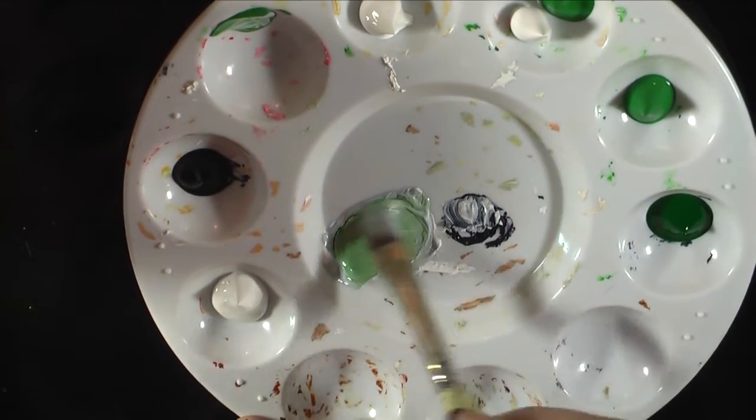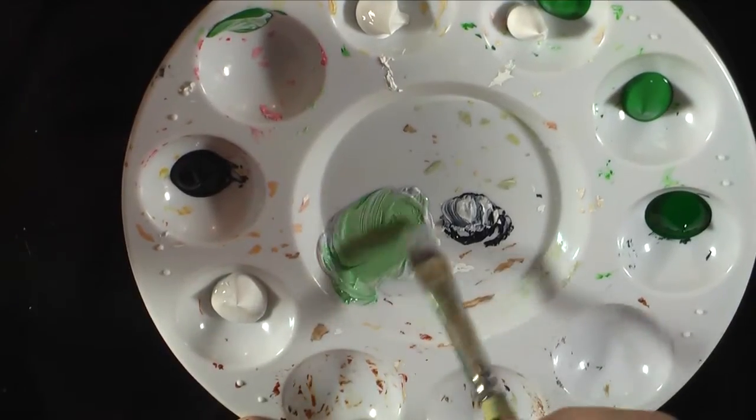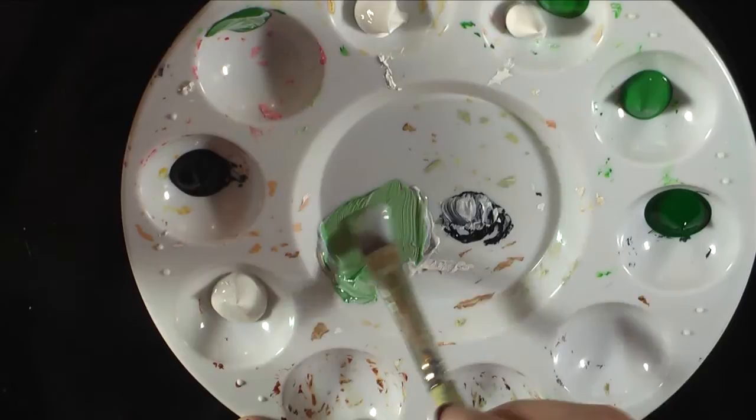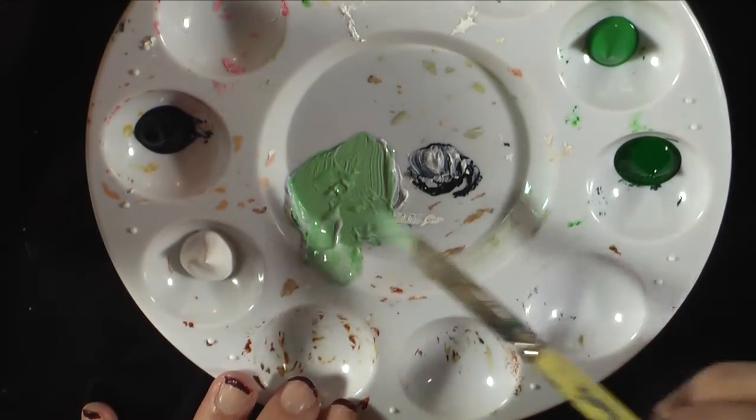What I'm trying to make is a kind of a muted light green color. So I made a gray, and then I mixed a little bit of the green, the sap green, into there.